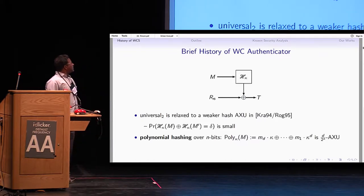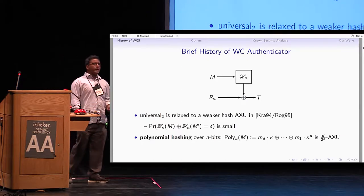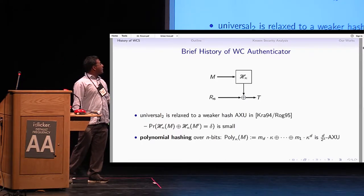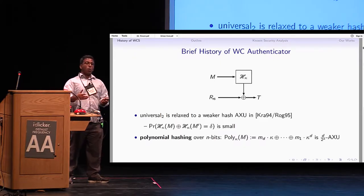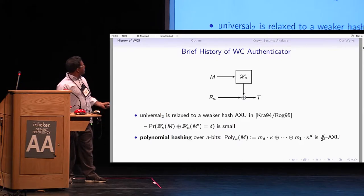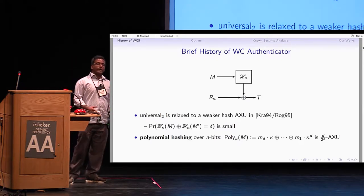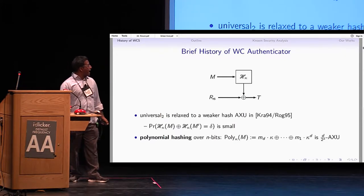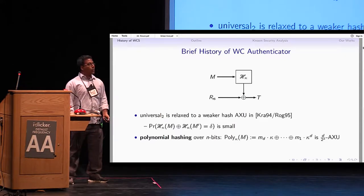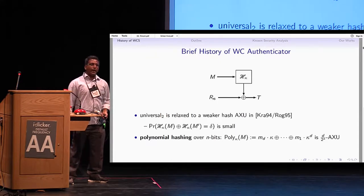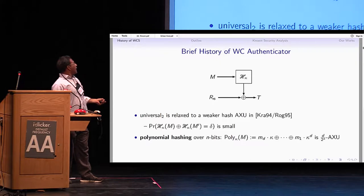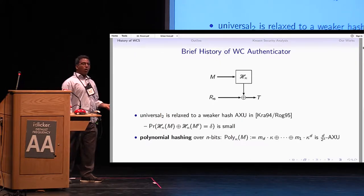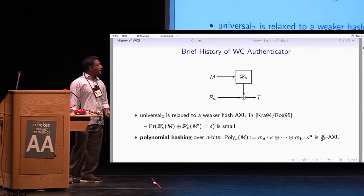There are two directions: one is what is the requirement of these hash functions. Initially it was a strongly universal-2 hash function, but whether that's required has been studied. You can relax to a weaker hash function, something known as an almost-XOR-universal (AXU) hash. Krawczyk in 1994 and Longo in 1995 considered these hash functions, which require that the maximum differential probability is small.